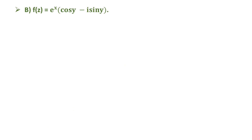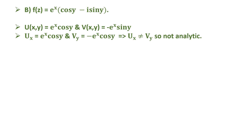For option b, f(z) = e^x times (cos y minus i sin y): the real part u(x,y) = e^x cos y and the imaginary part v(x,y) = minus e^x sin y, which gives ux = e^x cos y and vy = minus e^x cos y. This implies ux is not equal to vy, so the function is not analytic.